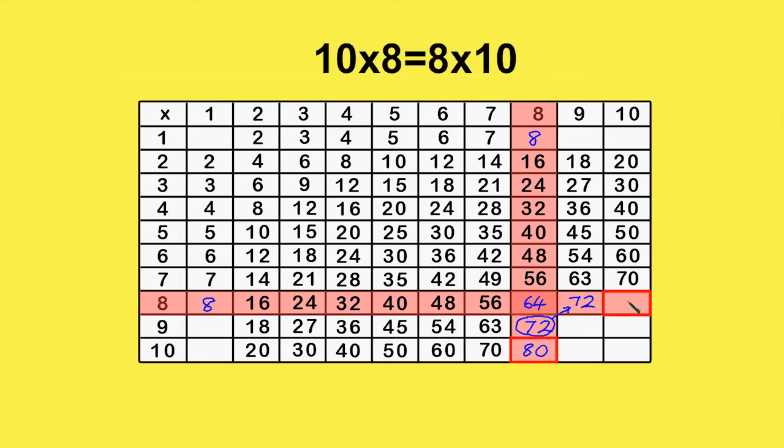Finally, 10 times 8 equals 8 times 10, which is 80. So we can fill in the final box in the 8th row.